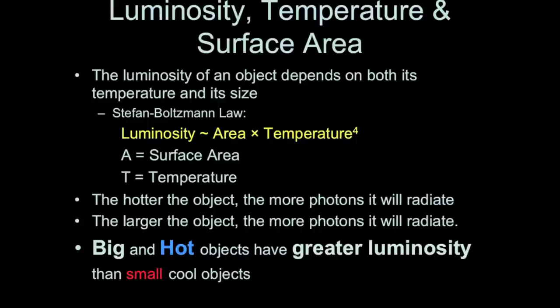So how is the size of an object and its temperature related to its energy output? In physics, there's actually a fundamental concept called the Stefan-Boltzmann law. This relates these three things together. The energy output, or luminosity that an object has, is proportional to its surface area times the fourth power of its temperature, or temperature to the fourth power.